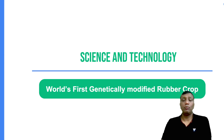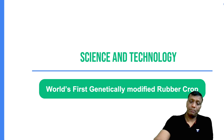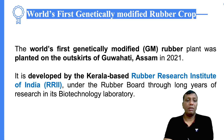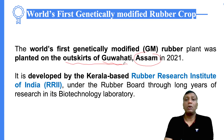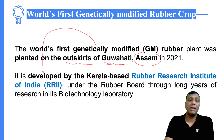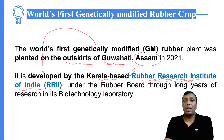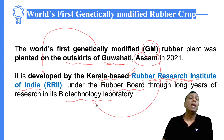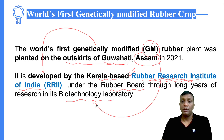The topic of this video is the world's first genetically modified rubber crop. This was news in late 2021. It was grown in the outskirt area of Guwahati, Assam. However, this GM crop was developed by a Kerala-based institution — the Rubber Research Institute of India — which works under the Rubber Board. After long years of research in its biotechnology laboratory, this GM plant was developed.